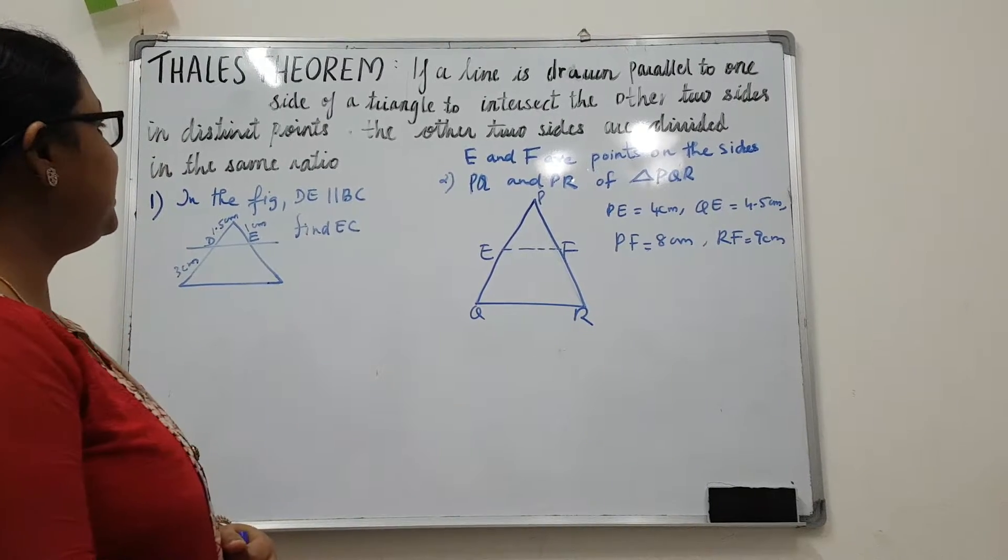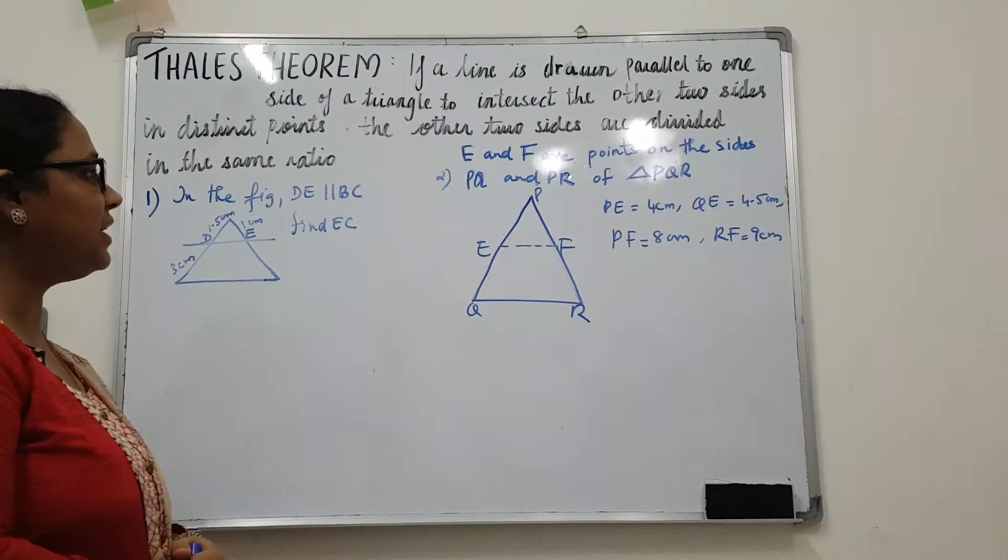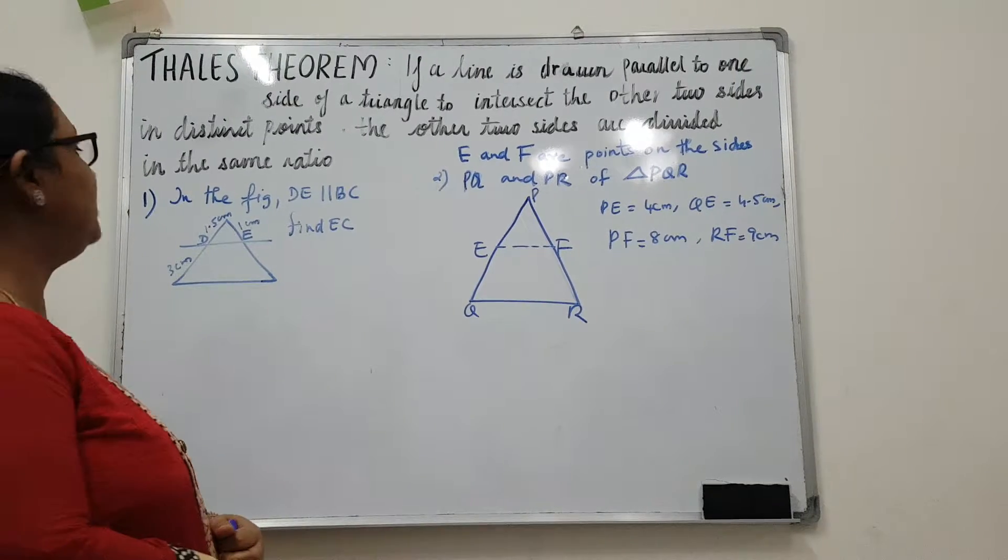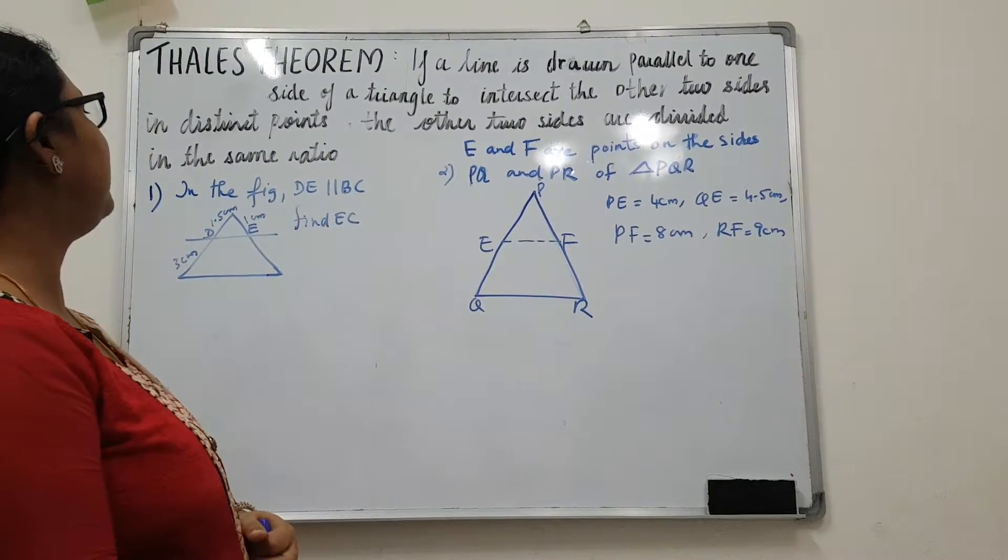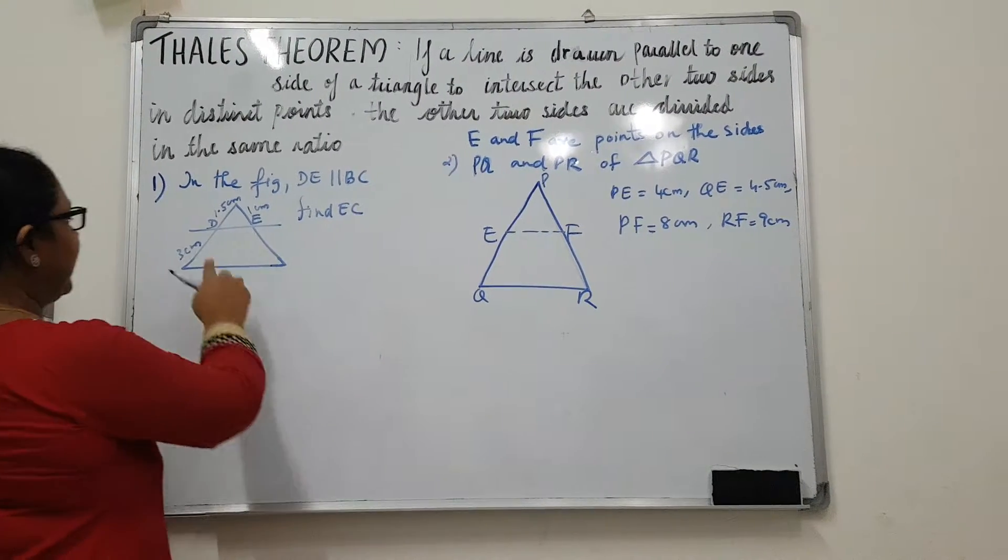So the theorem is, if a line is drawn parallel to one side of a triangle to intersect other two sides in distinct points, then the other two sides are divided in the same ratio.